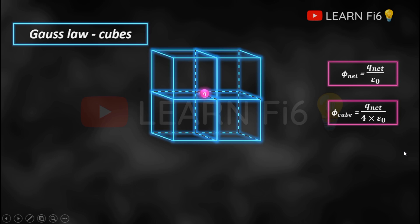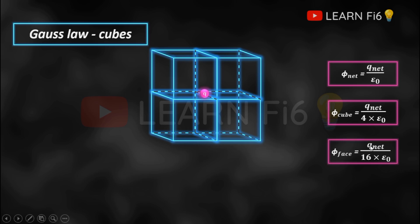Next we can find the total amount of flux shared by a single face. In this case, you can see 16 visible faces — you can pause the video and count the number of visible outside faces. The flux shared by a single face is given by the total charge divided by 16 times epsilon 0.